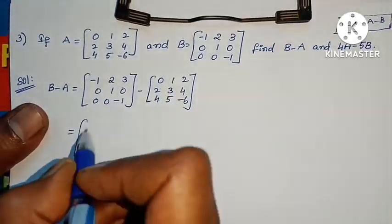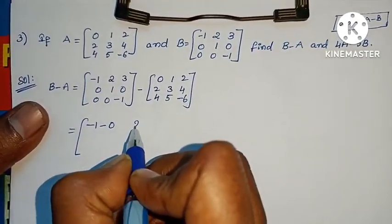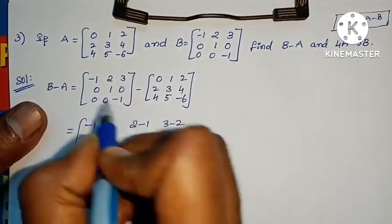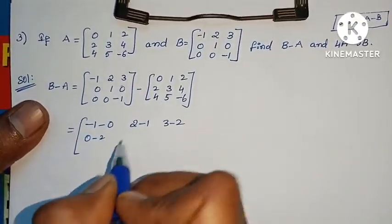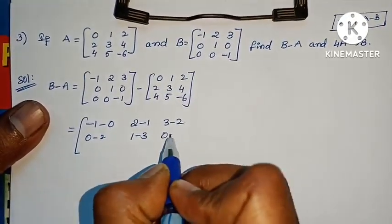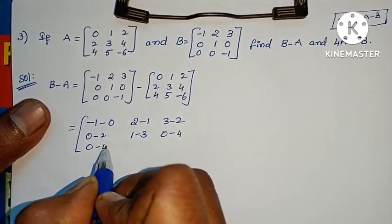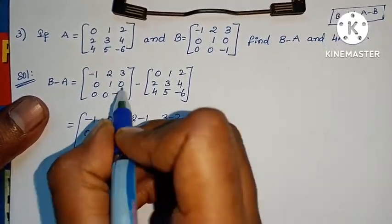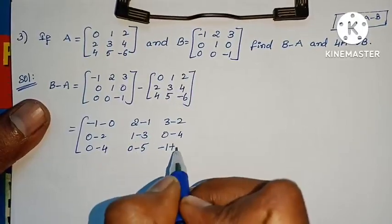Computing B minus A: minus 1 minus 0, 2 minus 1, 3 minus 2, 0 minus 2, 1 minus 3, 0 minus 4, 0 minus 4, 0 minus 5, minus 1 minus (minus 6) gives plus 6. Minus into minus gives plus.